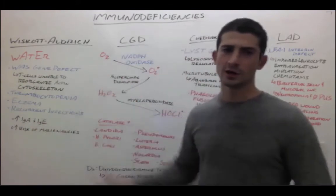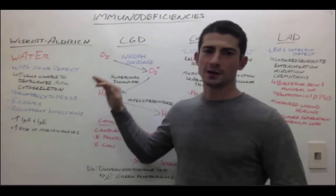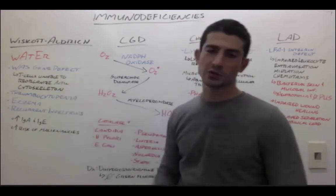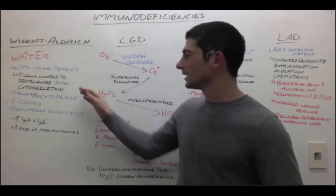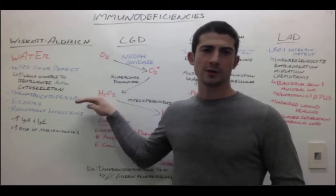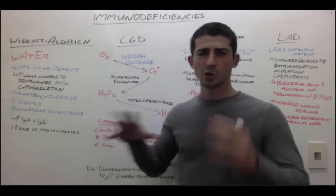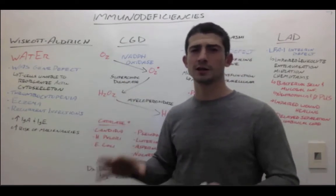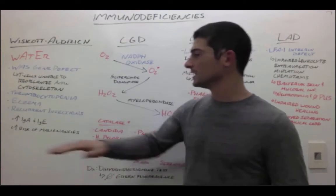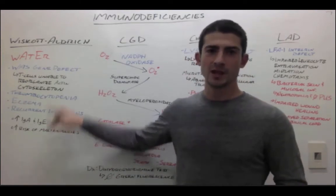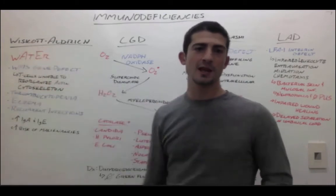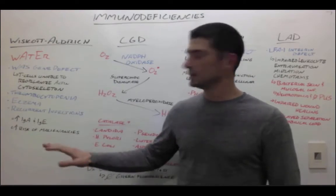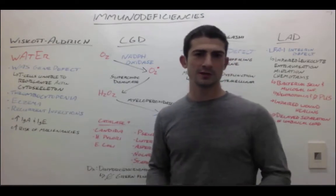First, Wiscott-Aldrich. The acronym WATER is very helpful. The disease is caused by a gene defect in the WASP gene, in which T cells are unable to reorganize their actin cytoskeleton, leading to recurrent infections. You also get thrombocytopenia and eczema. There's a more general problem with the immune system — you also have B-cell selective maturation processes, so you actually get increased levels of IgA and IgE. That is why in the acronym, A and E appear in a larger strain. Because the immune system is out of whack, you're at increased risk of malignancies such as leukemias and lymphomas.